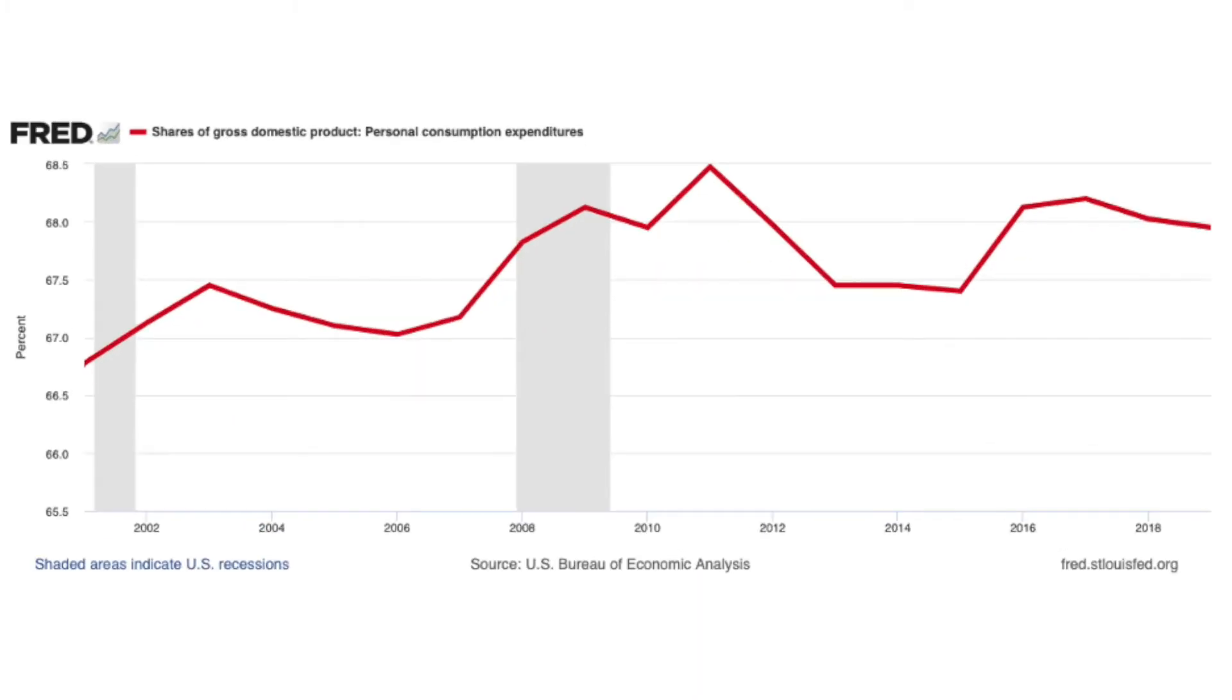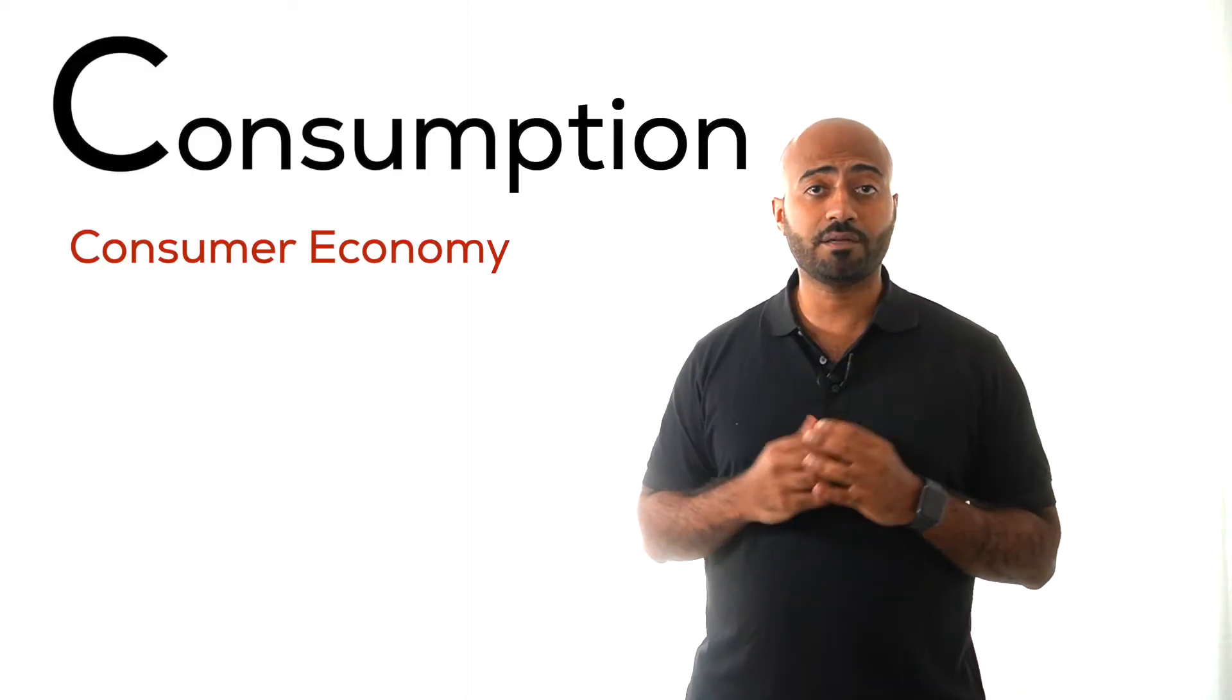This graph shows the share of GDP for personal consumption from 2001 to 2019. Roughly two-thirds of the US economy is based on consumer spending. This is why we often refer to the US as a consumer economy.